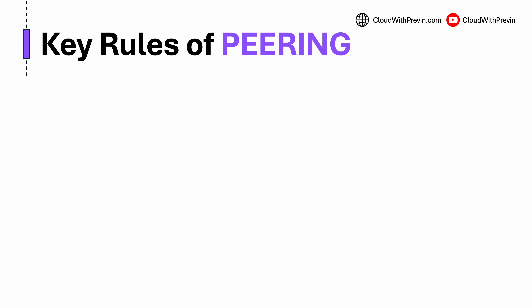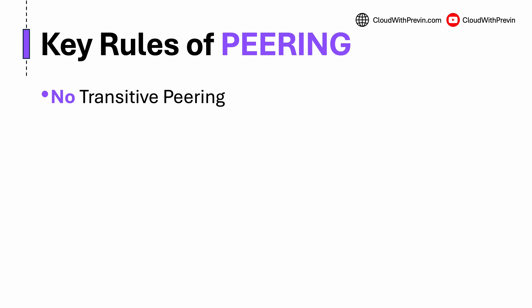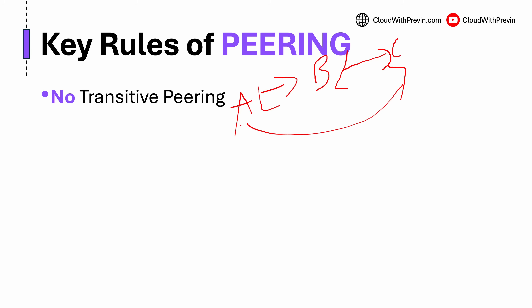Before we get too comfortable with peering, there are a few critical rules we've got to know. If we don't follow them, the traffic won't flow. The first rule: there is no transitive peering. This means that if VPC A is peered with VPC B, and VPC B is peered with VPC C, this does not mean that VPC A can reach VPC C. You need a direct peering connection between any two VPCs that need to talk.